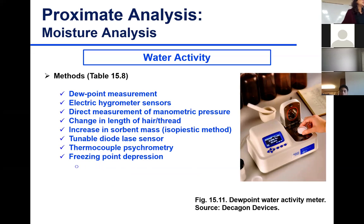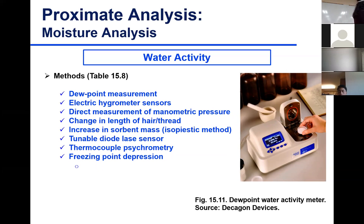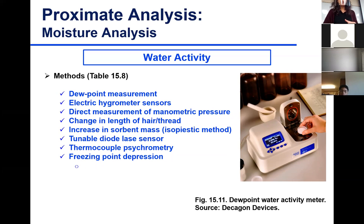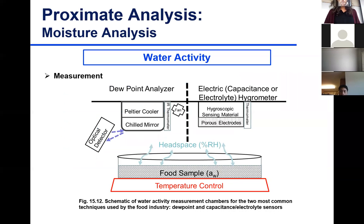There are many different ways to measure water activity, but the main ones used are the dew point measurement and the electric hygrometer sensor. You will see Decagon devices that are based on either dew point or electric hygrometer sensor.